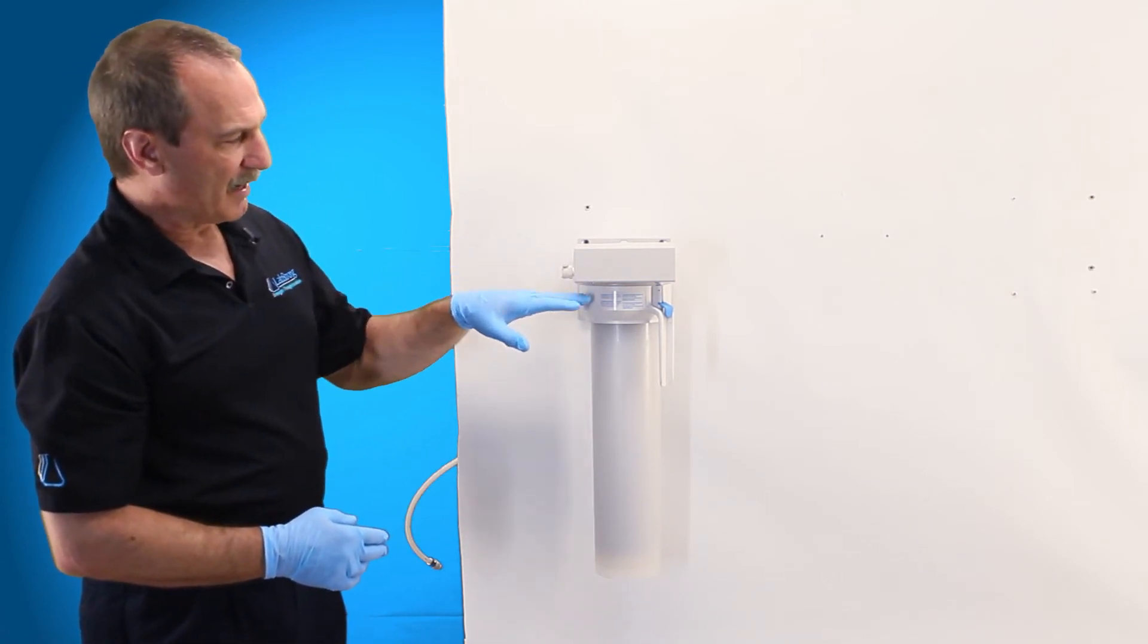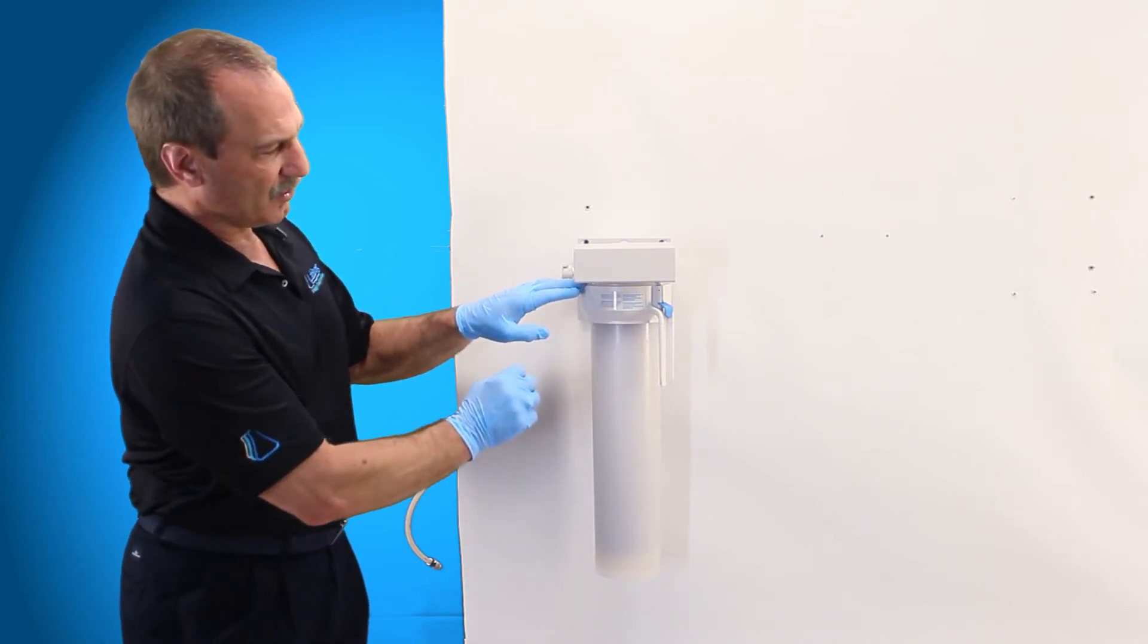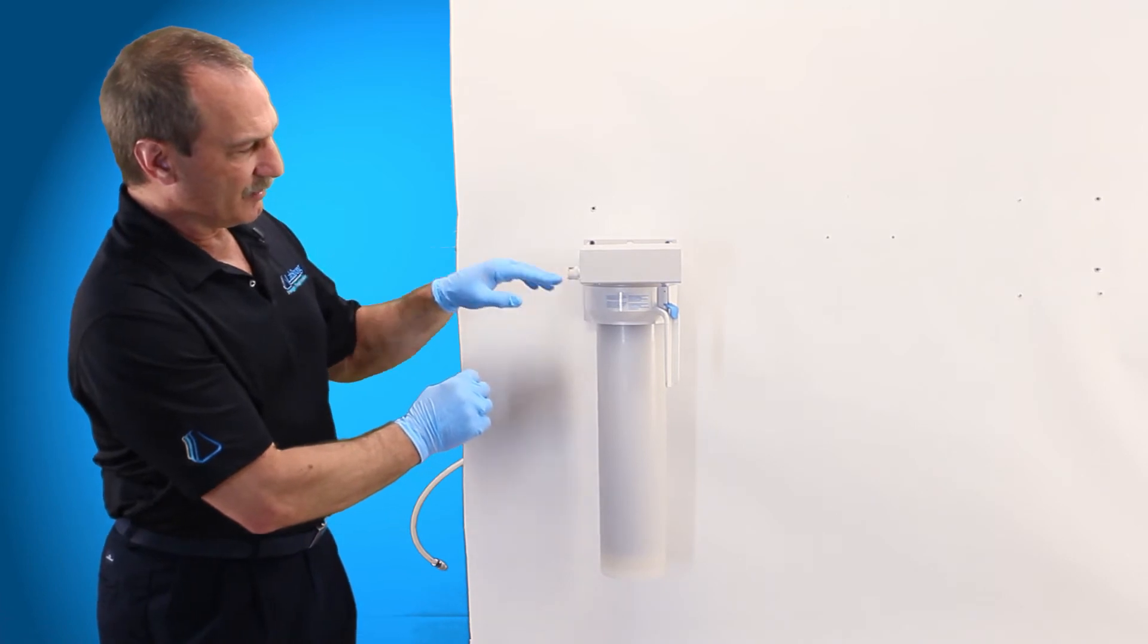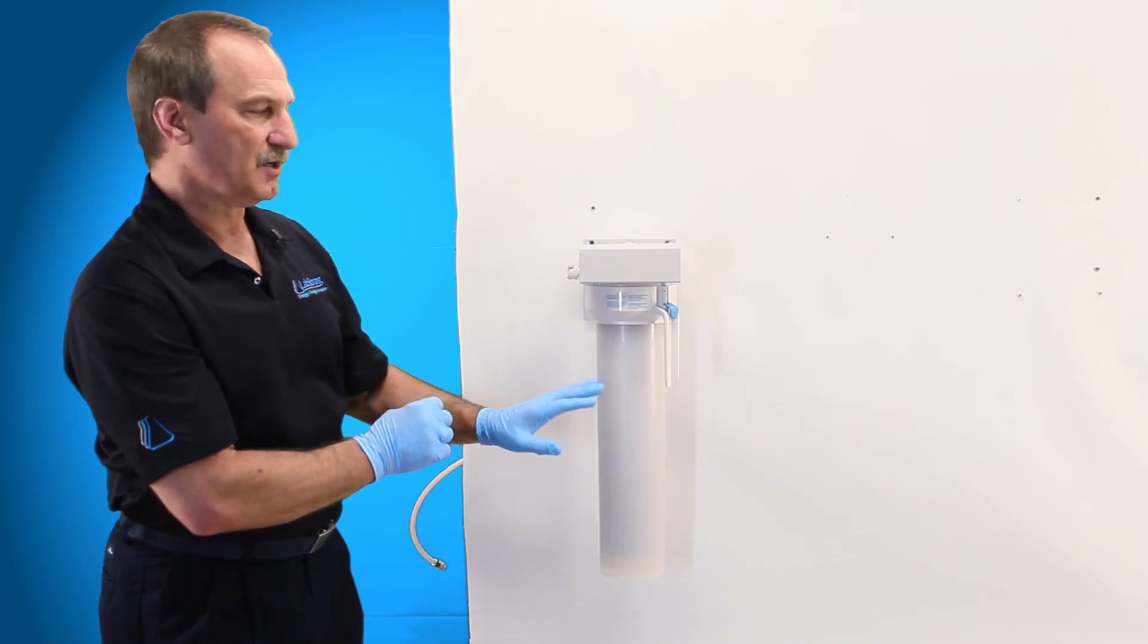That's very important because you don't want it to bypass. Water, if you don't have that sealed up inside of there when we first install it, could bypass the cartridge, go out the other side and not even go through the cartridge. You don't want that.